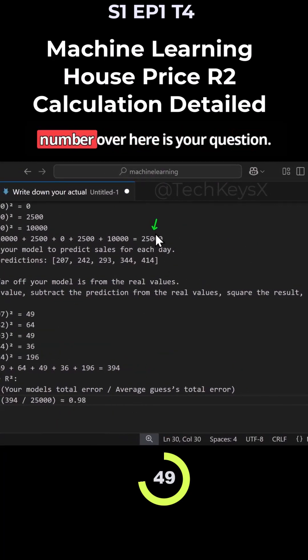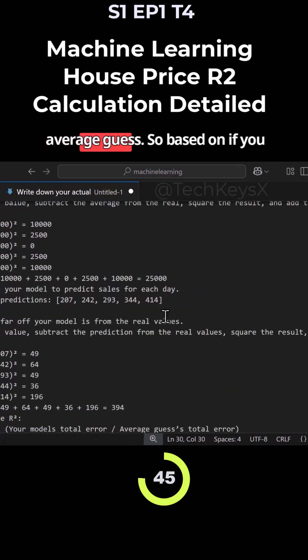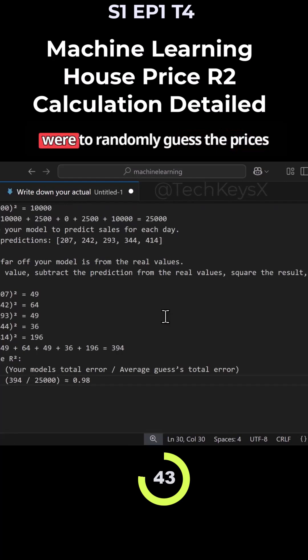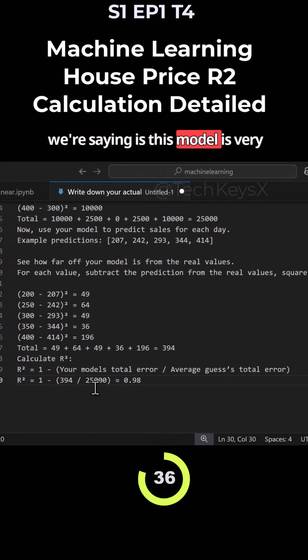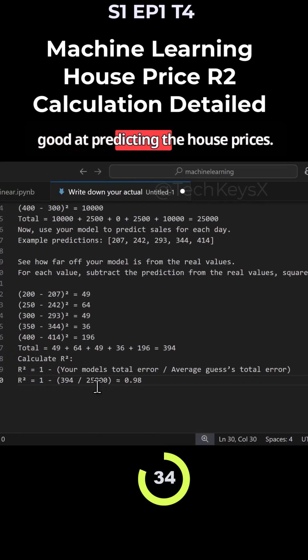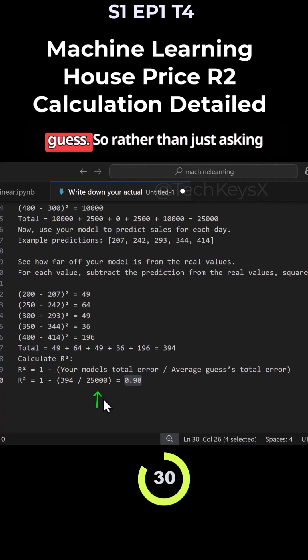Why do we divide by this number over here is your question. This is what you might say is your average guess. So based on if you were to randomly guess the prices versus using the model, then what we're saying is this model is very good at predicting the house prices. It is 98% better than your average guess. So rather than just asking your friend to guess the house price, the model that we have built using linear regression is 98% accurate versus the average user's guess.